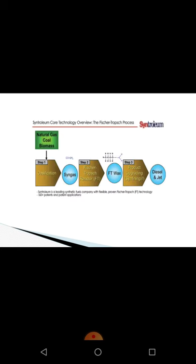Looking at this sketch, you can see natural gas, coal, and gasification producing coal gas. This goes into the Fischer-Tropsch reactor — the F-T process — producing F-T wax as an intermediate stage, which is then refined into petroleum. We use these products as diesel and jet fuel.